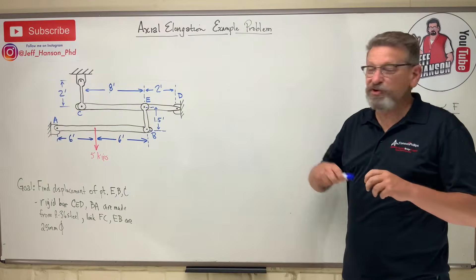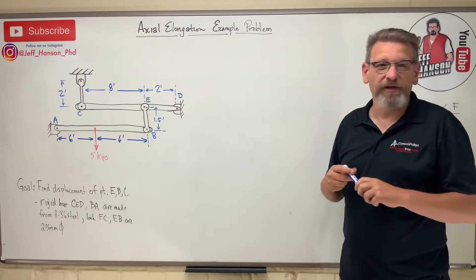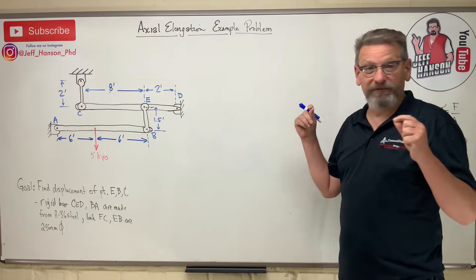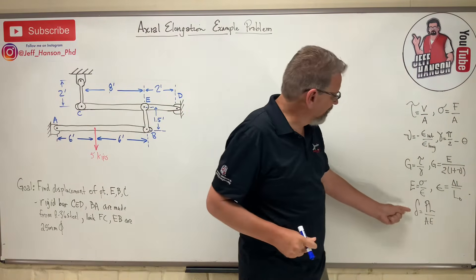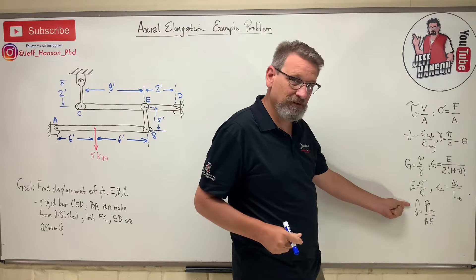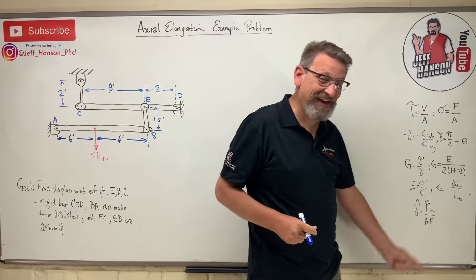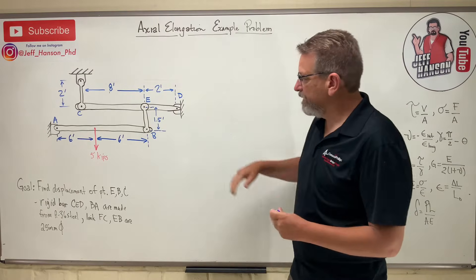Hey, welcome back my favorite students. Today we're talking about axial elongation. We just did this in the last video, right? Delta equals PL over AE. Let's see what they want to do today.